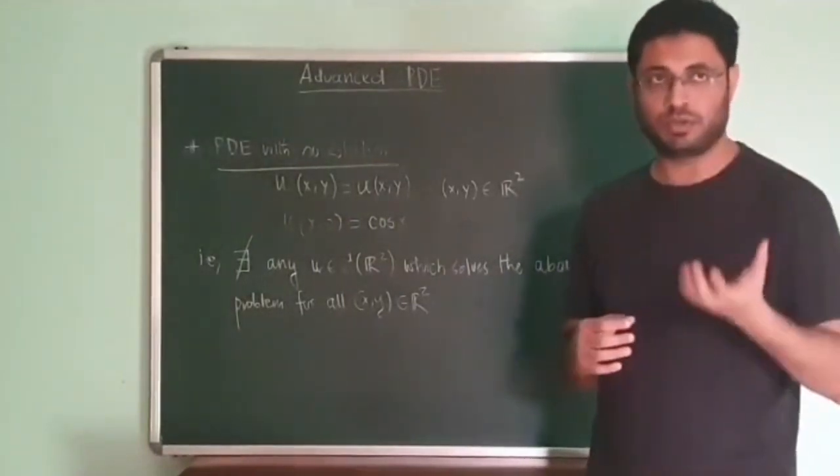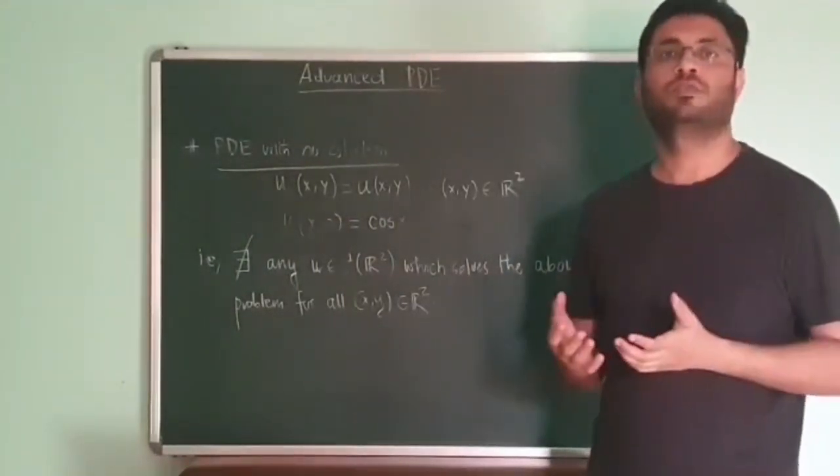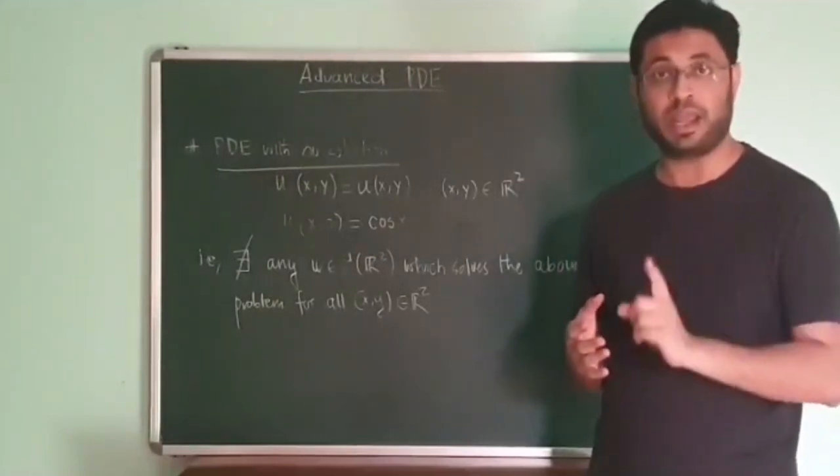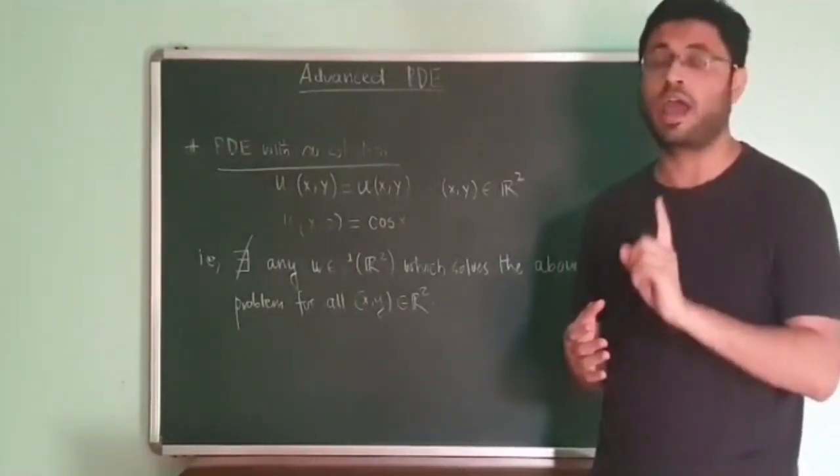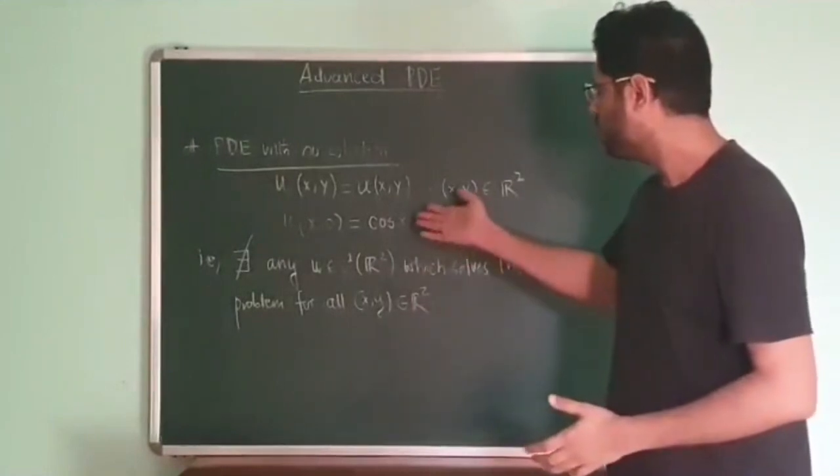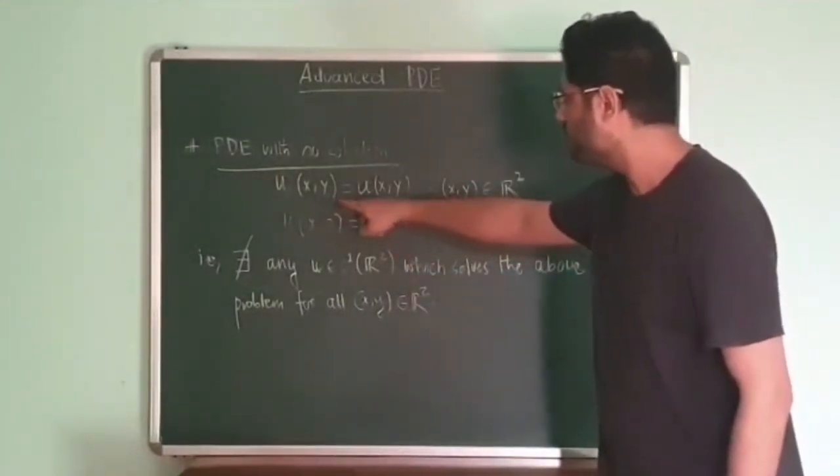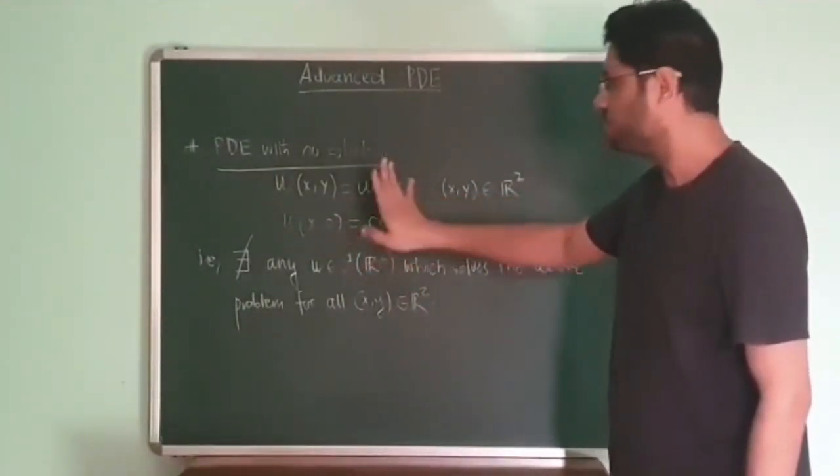But to be fair, most PDEs may actually not have a solution. For example, let's look at this PDE: u_x equals u, and u at the point x equals cosine x.